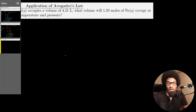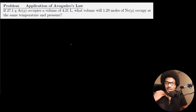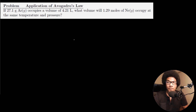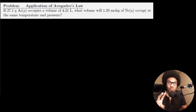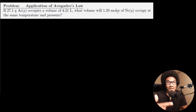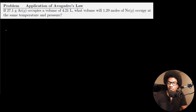Last problem — an application of Avogadro's Law. This problem says: if 27.1 grams of argon gas occupies a volume of 4.21 liters, what volume will 1.29 moles of neon occupy at the same temperature and pressure? Remember that Avogadro's Law establishes a proportionality between volume and the number of moles, and it also tells us that the identity of the gas doesn't matter — we can apply this to any gas. So we can use conditions for argon to get insight about neon.